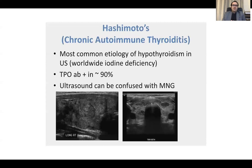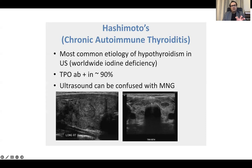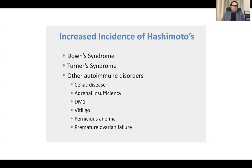Hashimoto's chronic autoimmune thyroiditis is the most common etiology of hypothyroidism in the US. TPO antibodies — thyroid peroxidase antibodies — are positive in 90% of cases. Because of chronic inflammation and fibrosis, the patient may have a pseudo-nodular goiter appearance that can be confused with multinodular goiter. There is also increased incidence of Hashimoto's in Down syndrome, Turner syndrome, and other autoimmune disorders like celiac disease, adrenal insufficiency, and type 1 diabetes.